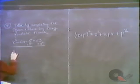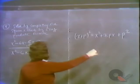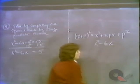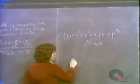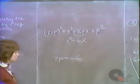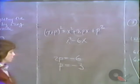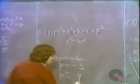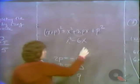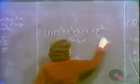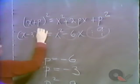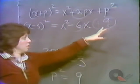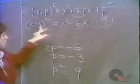We start with x squared minus 6x equals 5. We ask: what's missing to make x squared minus 6x a perfect square? If the coefficient of x is 2p, then 2p equals minus 6, so p equals minus 3, and p squared equals plus 9. What's missing is plus 9. If we had x squared minus 6x plus 9, that would be x minus 3 squared — a perfect square.